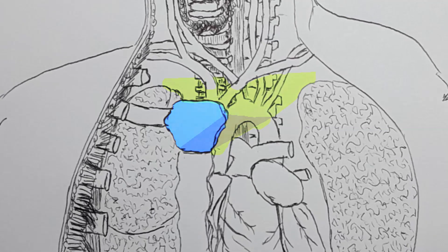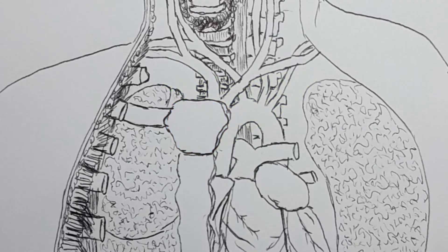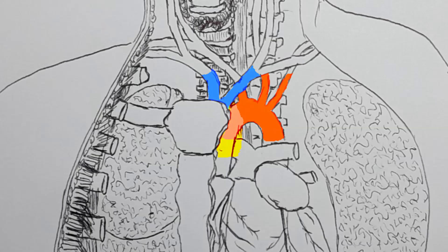There in the superior mediastinum we find the superior portion of the thymus, the great arteries and veins, the trachea, the esophagus, the vagus and phrenic nerves, as well as the thoracic duct.